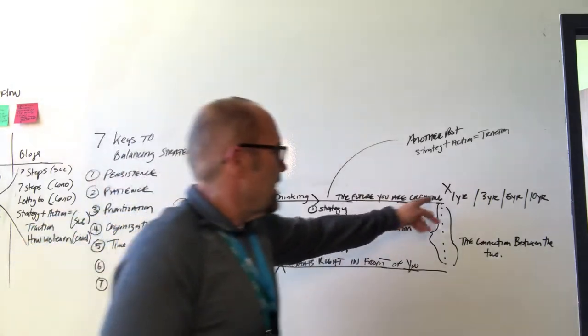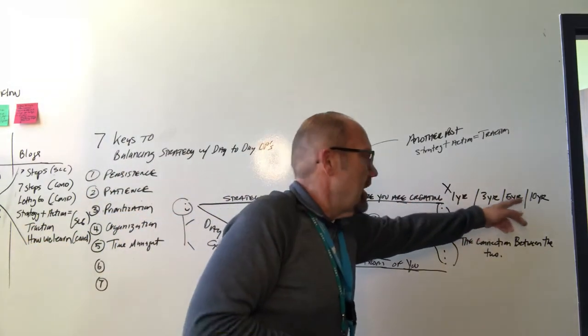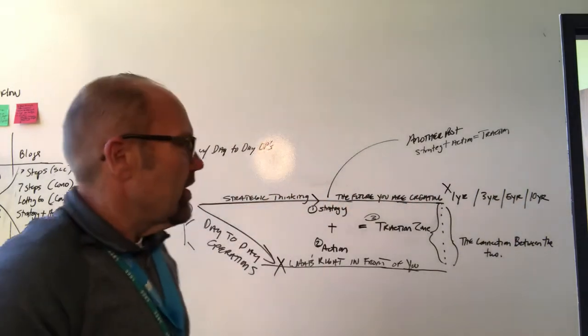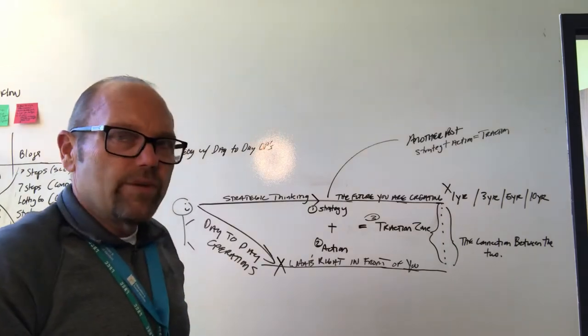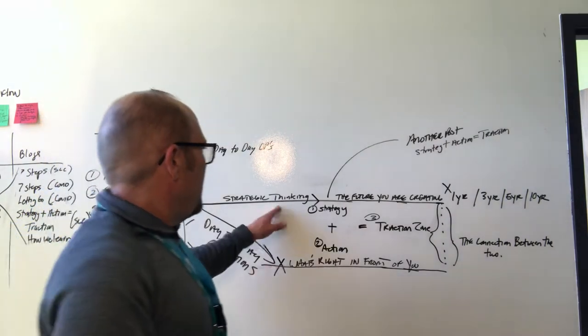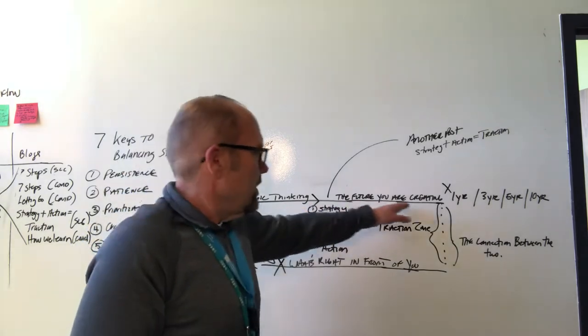So if you can see the X here, year one, three, five, and ten—depending on how far you're going to go out for the vision you may have for your business, organization, or team. That is the strategic thinking and the future you are creating.